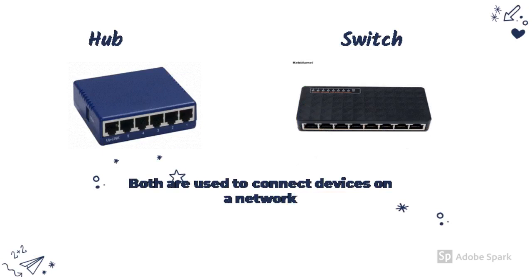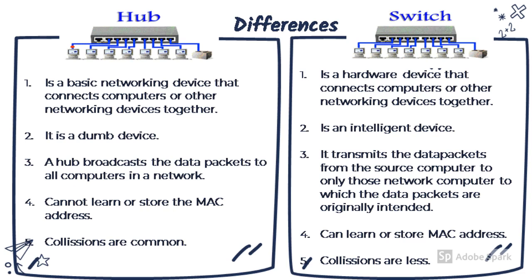Here you can see a picture of a hub and a switch. They are both hardware devices used to connect devices on a network. Both are basic networking devices that connect computers or other networking devices together. However, a hub is called a dumb device whereas a switch is called an intelligent device. A hub cannot learn or store the MAC address, so it simply forwards data to all systems on the network. A switch, on the other hand, can learn and store the MAC address. Data collisions are common in a hub whereas they are less common in a switch.